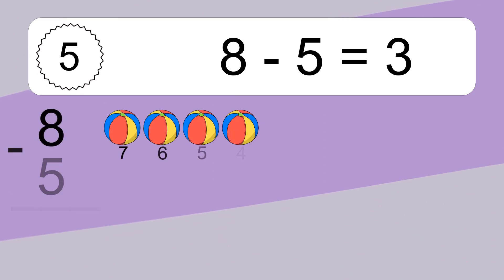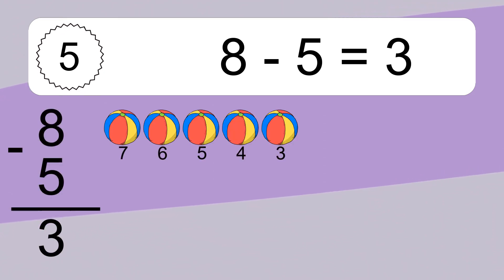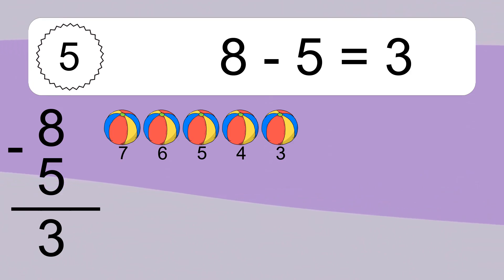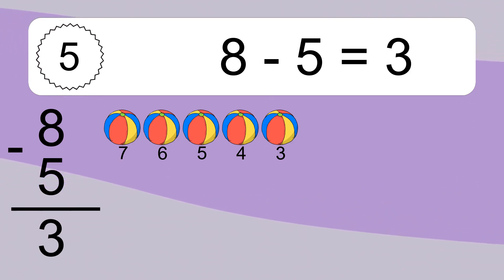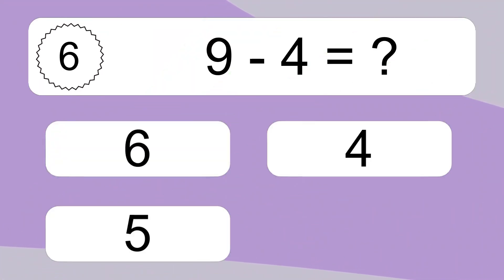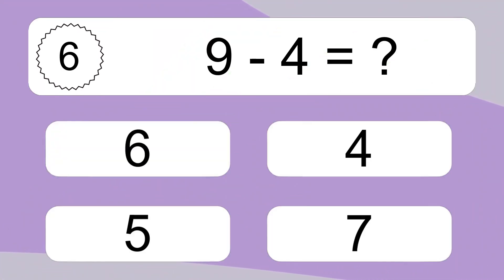8 minus 5 equals what? 8 minus 5 equals 3. Let's count it. 7, 6, 5, 4, 3.